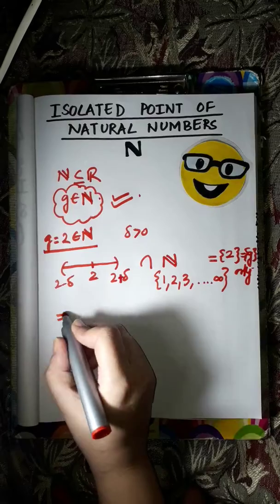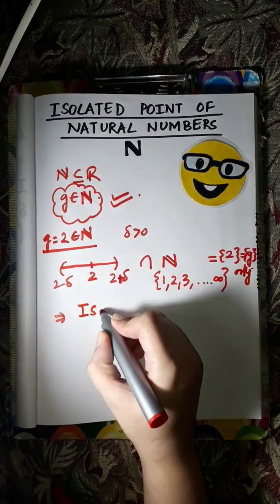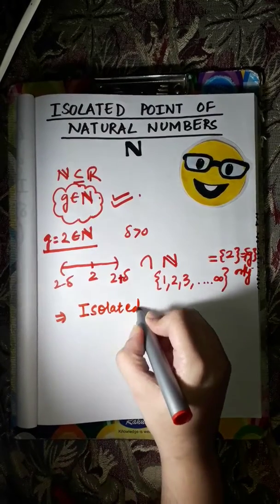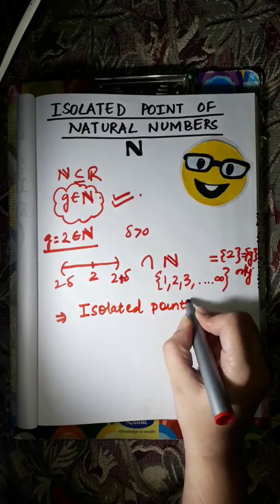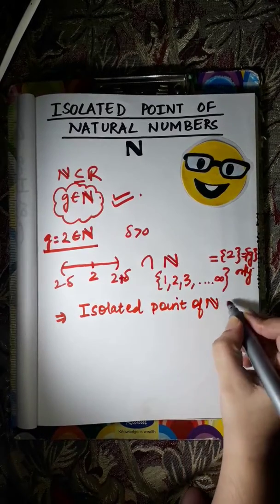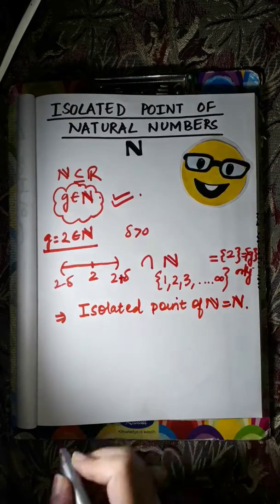This implies that the isolated point of natural numbers equals natural numbers only.